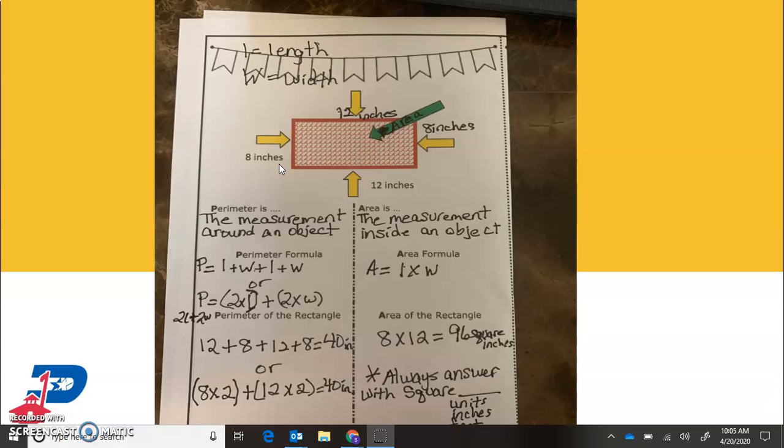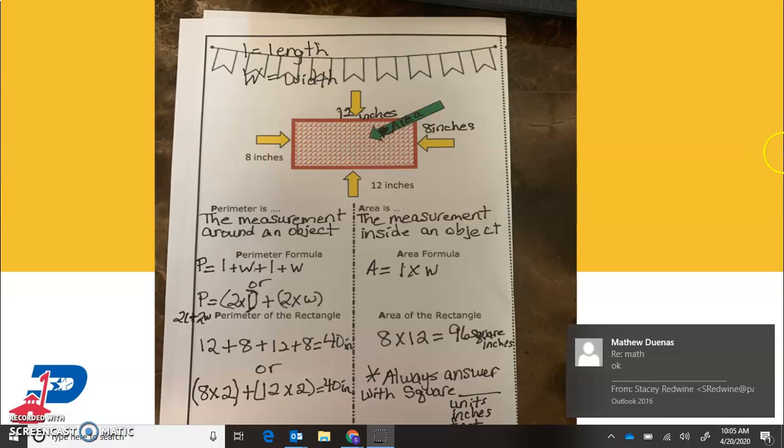That's how we find perimeter. It's just that easy. Two things you need to know, two words you need to know, besides perimeter and area, is length and width.